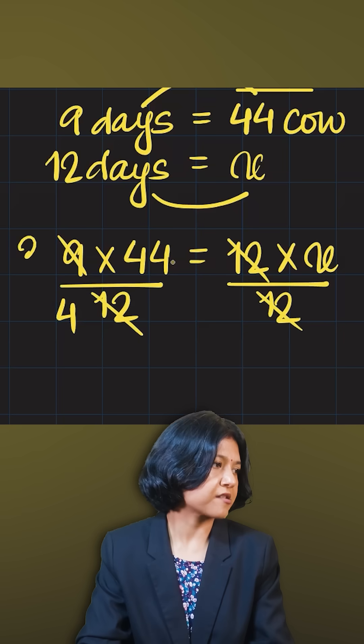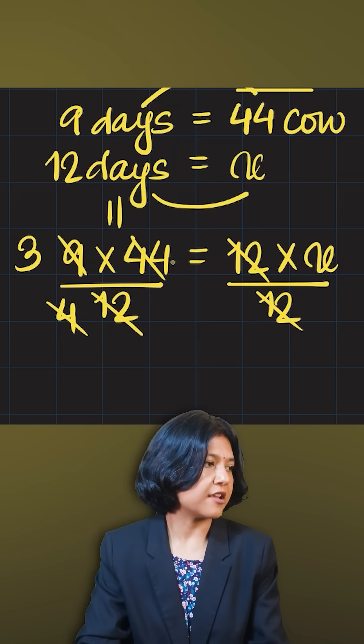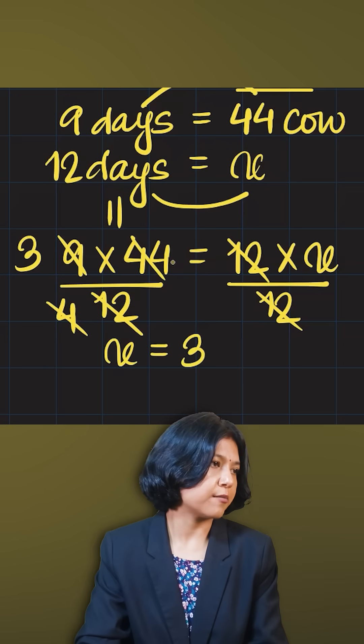3 into 4 is 12, 3 into 3 is 9, 4 into 11 is 44. Answer is just 11 times 3, 33. This is the number of cows.